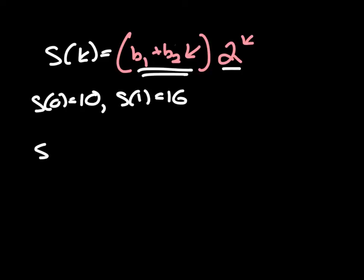If I plug in 0, I will get b₁ + b₂(0), and that is times 2^0. The red stuff is where the k is going. Now this, okay, so now let's do a little simplifying here.